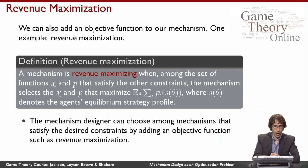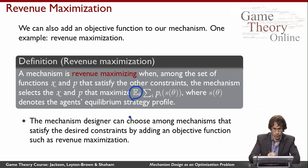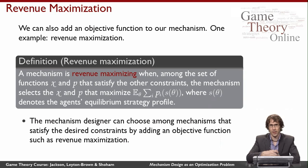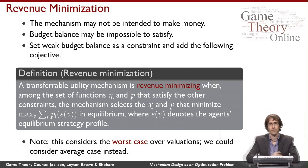A mechanism is revenue maximizing when, among all functions x and p that satisfy whatever other constraints we care about, the mechanism selects those that maximize the expectation over the agents' types of the sum of the payments under their equilibrium strategy profile. Note I'm using the theta notation for types instead of values, but the sense is the same.